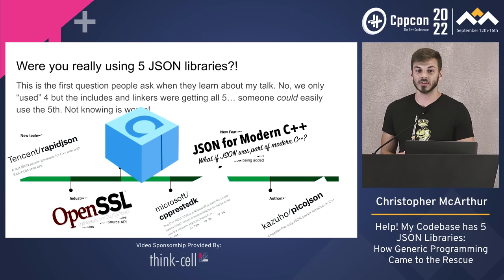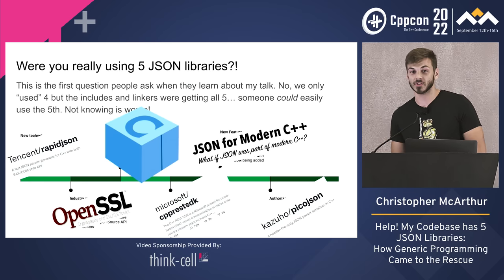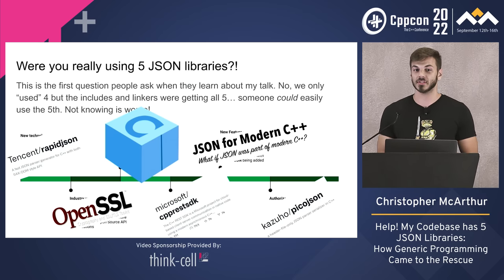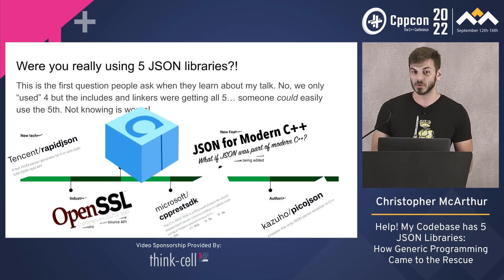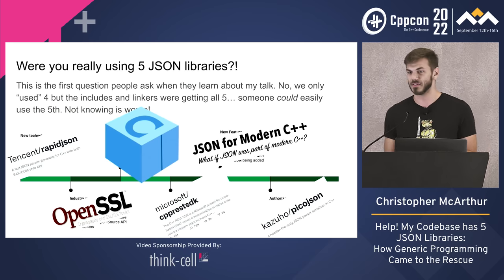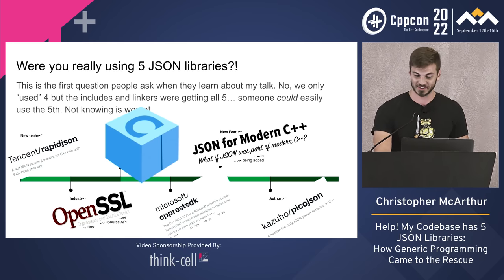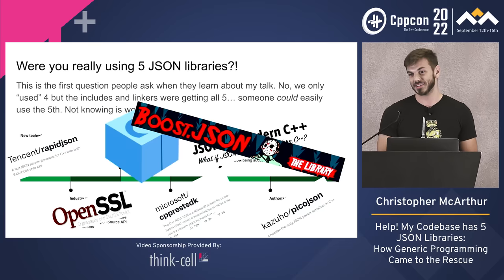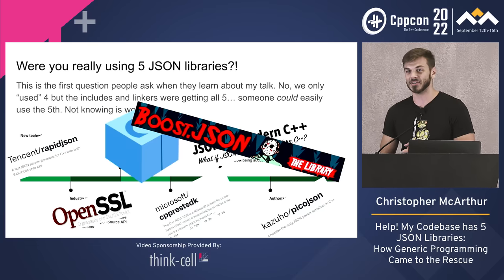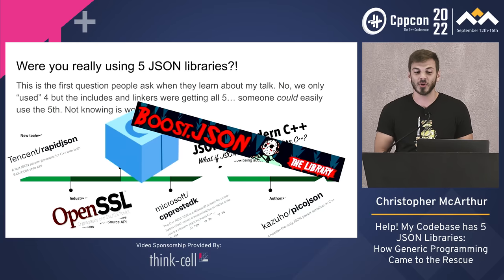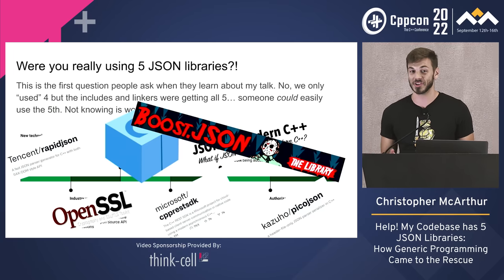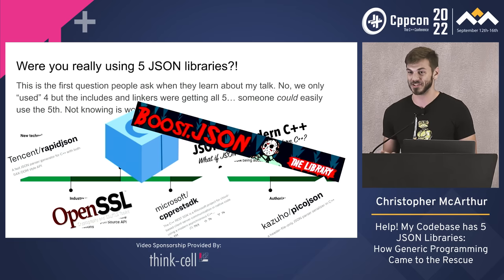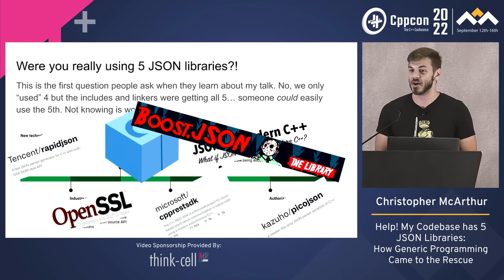But of course we're using Conan, so we update our dependencies — and what came out in Boost 1.75 or 1.76? BoostJSON. So the only thing worse than using five JSON libraries is not knowing if you're using five JSON libraries.